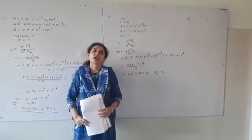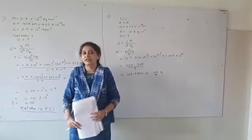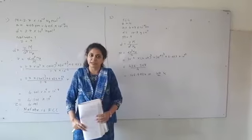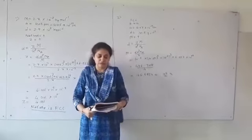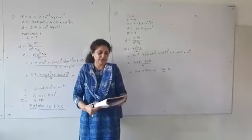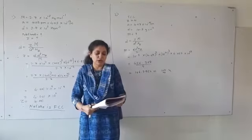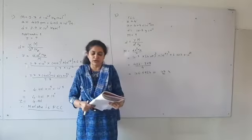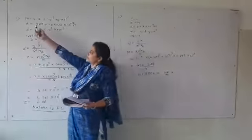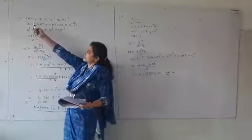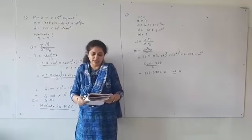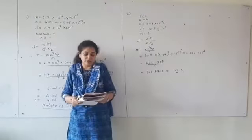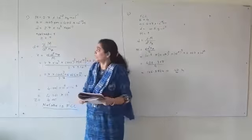Good morning students. Today in this video, I will solve numericals of solid state chapter. I will first read out the numerical if you need to solve first. An element with molar mass 2.7 × 10⁻² kg per mole forms a cubic unit cell with edge length 405 picometer.